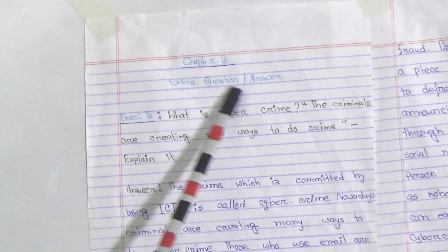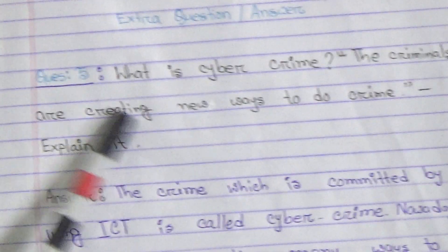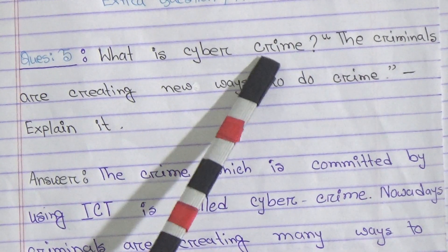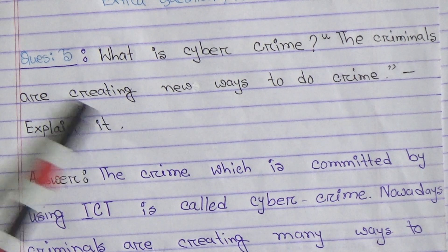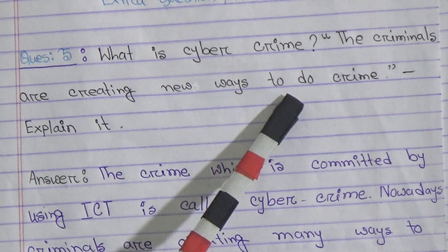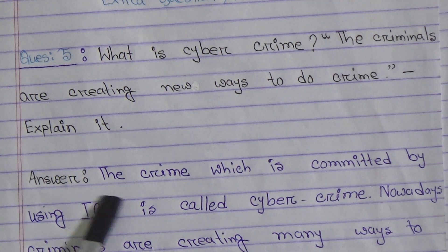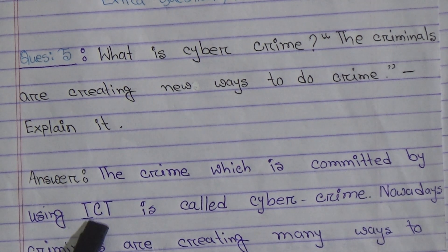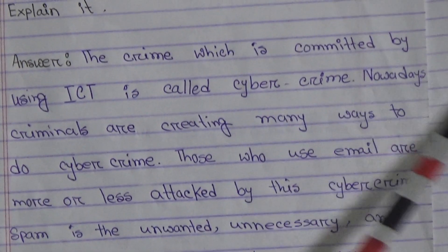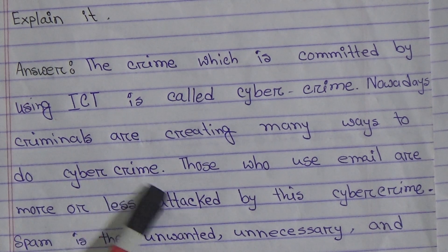Chapter 3 extra question answer. Question 5: What is cybercrime? The criminals are creating new ways to do crime — explain it. Answer: The crime which is committed by using ICT is called cybercrime. Nowadays the criminals are creating many ways to do cybercrime.